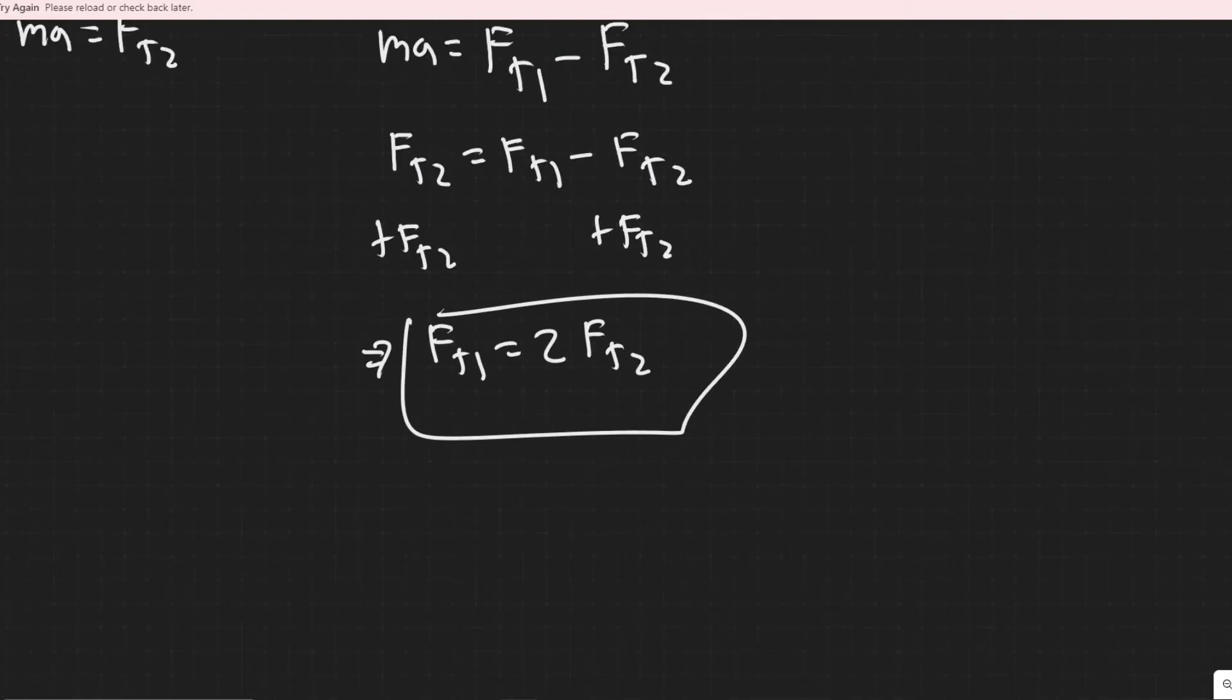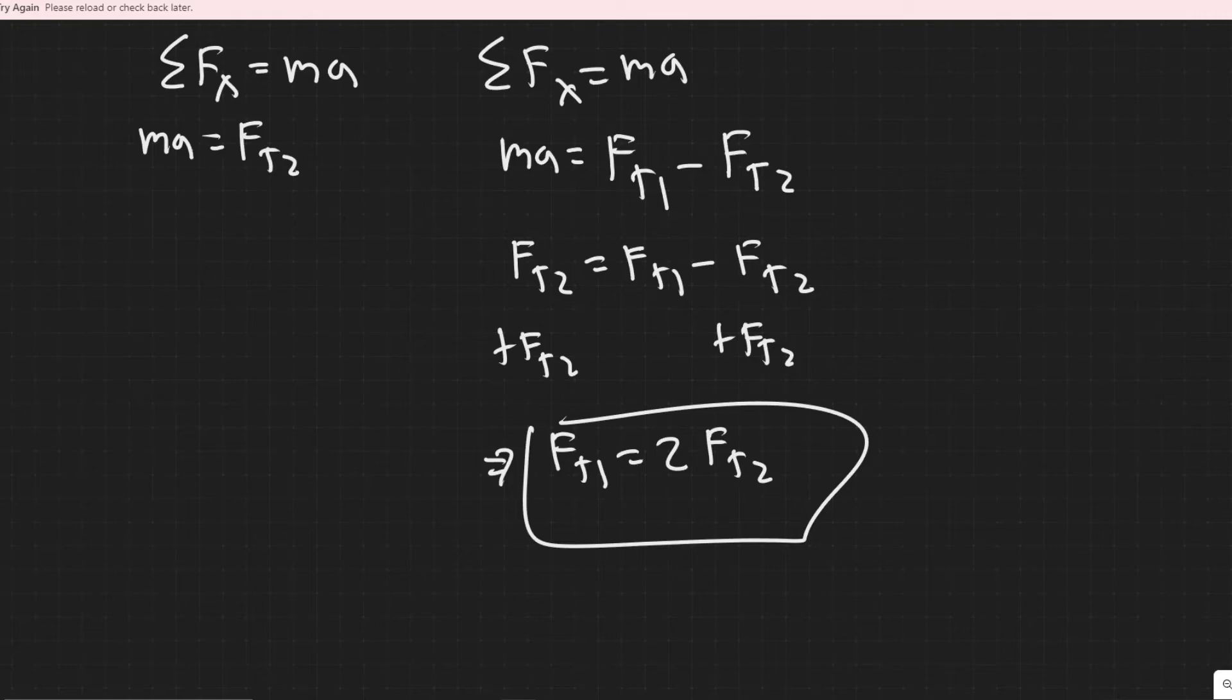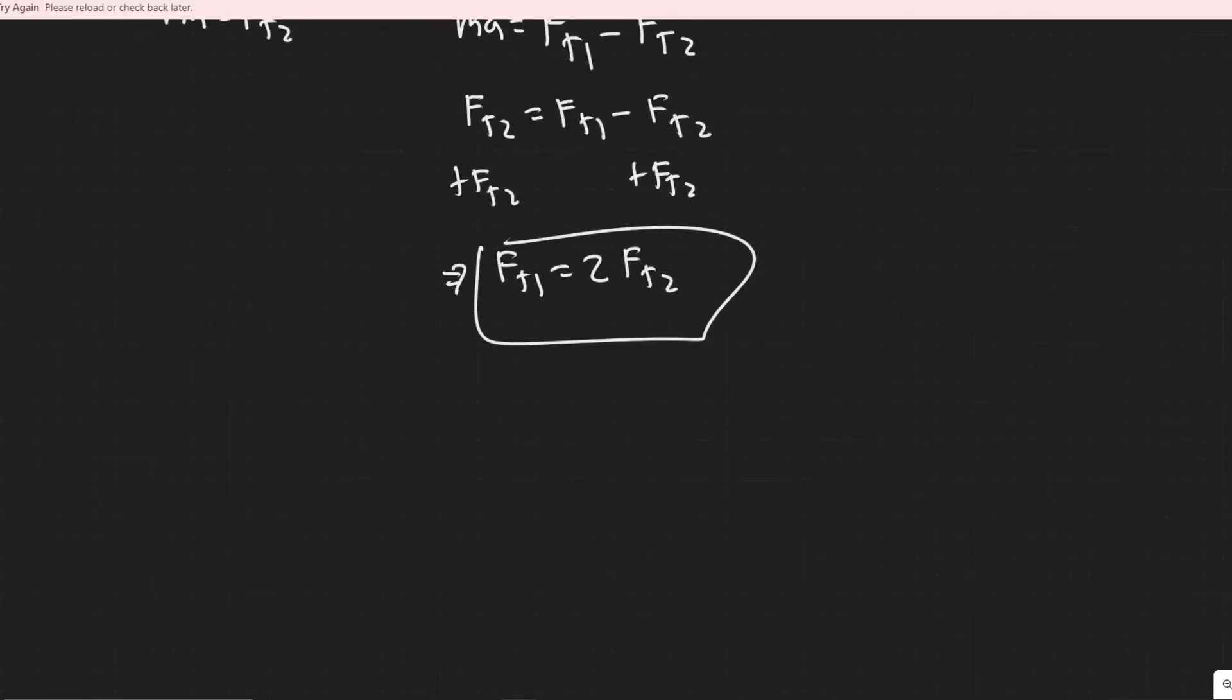But yeah, so that's how you would write it. And yeah, so just a quick summary of how we did this. You could write it like this. So you could say Ft1 equals 2 Ft2. Sometimes when they talk about the ratio, they want it divided. So you would say 2 is equal to Ft1 over Ft2.